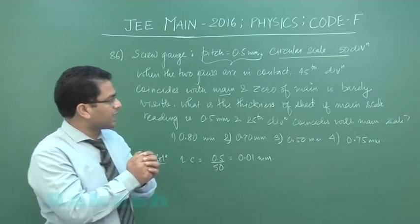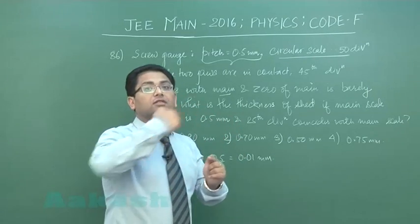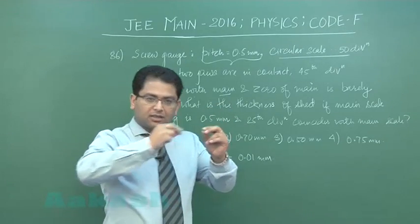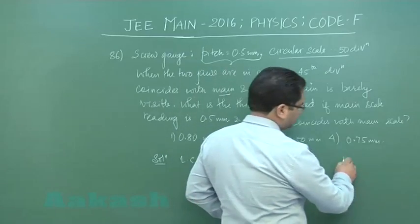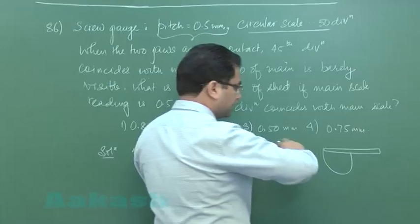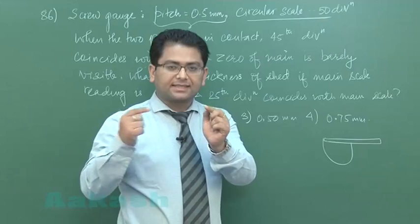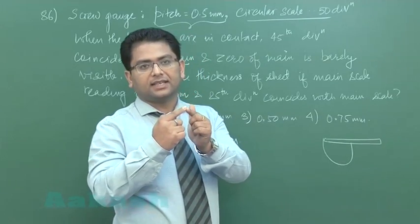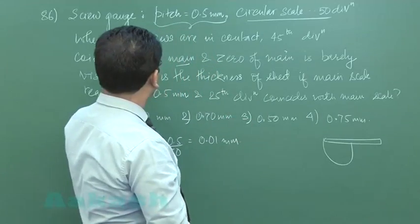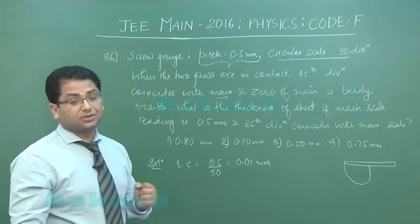In that particular situation, there are 5 divisions which have overrun while tying the linear scale. So it's something like this: this is the linear scale, and when we tie it, when these two jaws touch, exactly zero should coincide. But this time beyond zero, the 45th division is coinciding with the main scale and zero is not visible. This is a clear case of negative error.